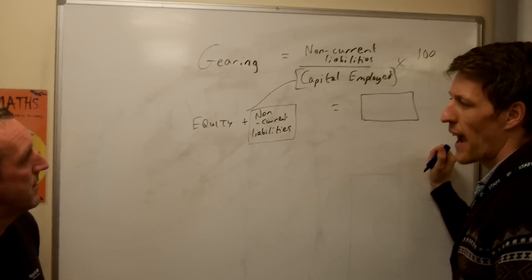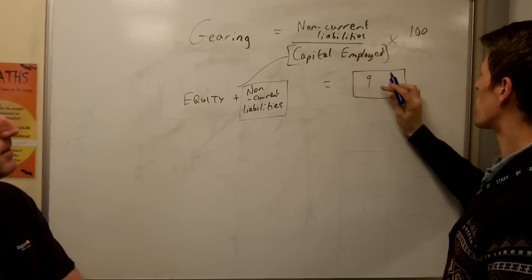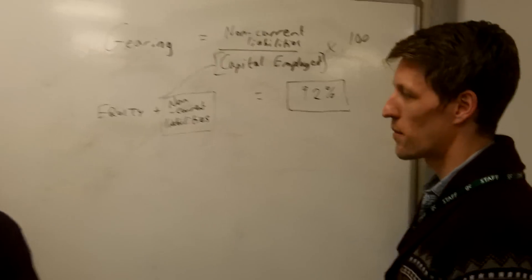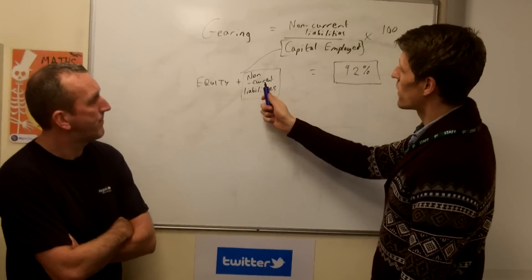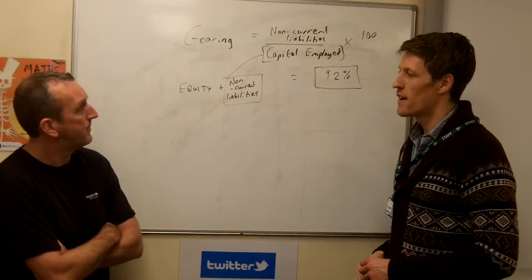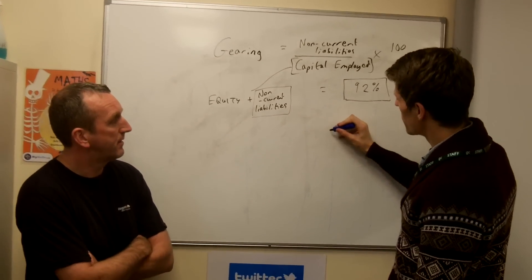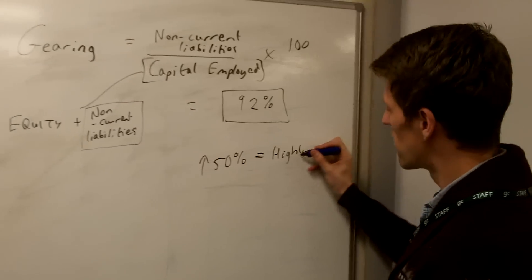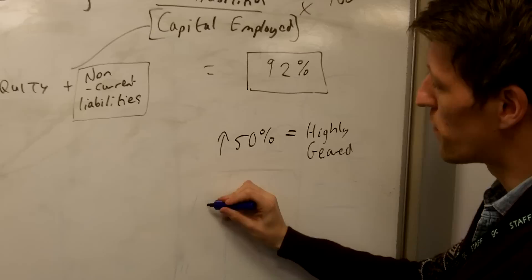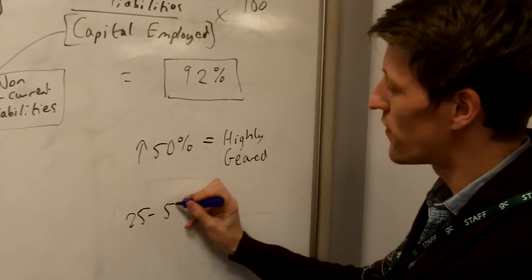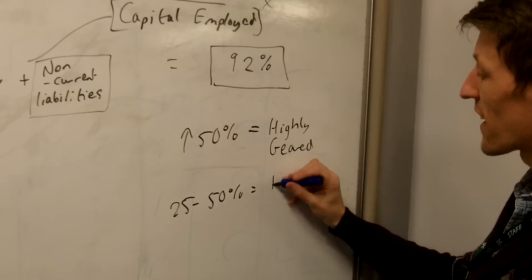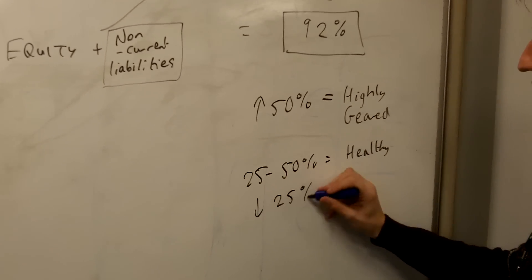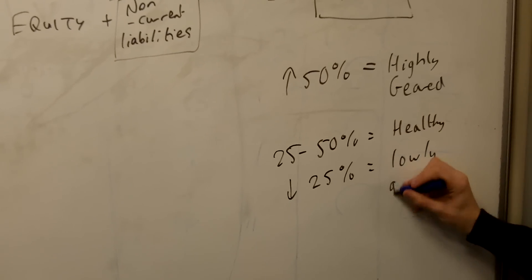Okay, and I know that the Next gearing ratio is 90, I think 92% was what I saw. Wow. That sounds quite high. Ridiculously high I've been told, because it means that of their capital employed, 92% of it is made up of loans from banks. Right. And we were told that if you've got a gearing figure that's higher than 50%, the business is said to be highly geared. Okay. And if you're between 25 to 50%, that's considered like a healthy gearing ratio. This is what they say. And then if it's lower than 25%, the business is lowly geared or has low gearing.